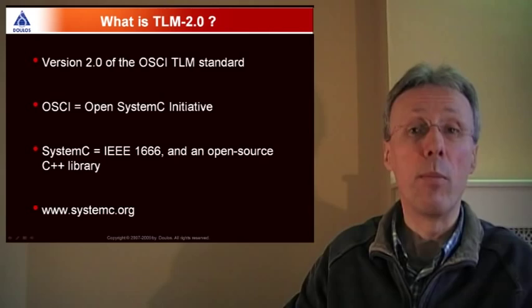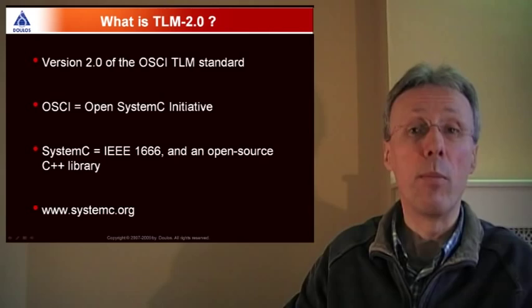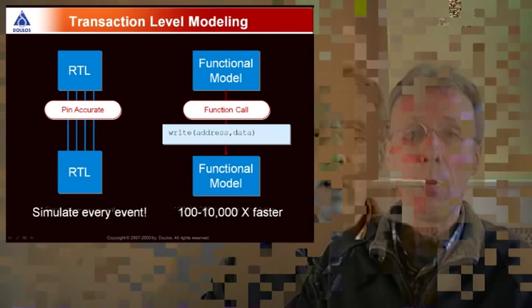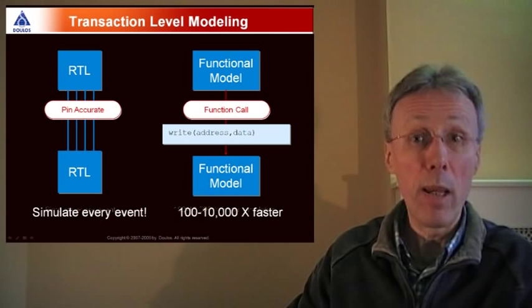TLM in turn stands for transaction level modeling. Transaction level modeling is an abstraction level above RTL whose primary purpose is to accelerate simulation. It does that by replacing all of the individual events and pin wiggles that occur within an RTL simulation with one or a few function calls and the result is much faster simulation.